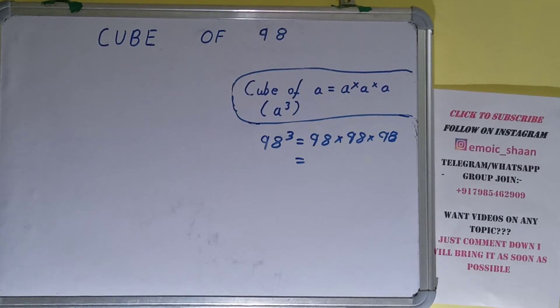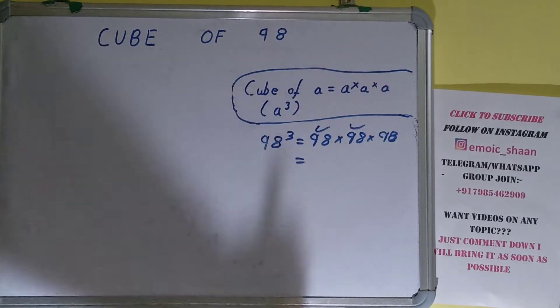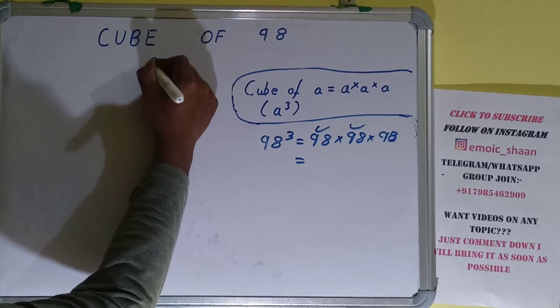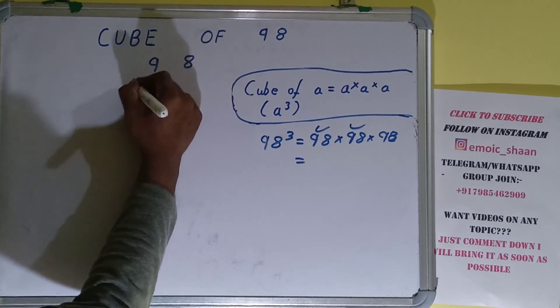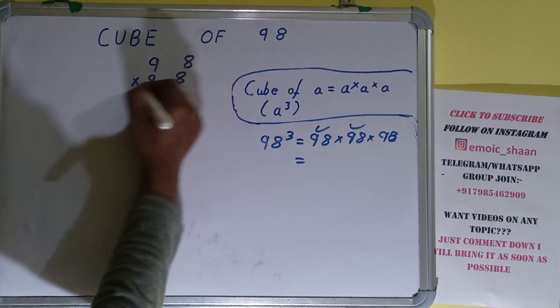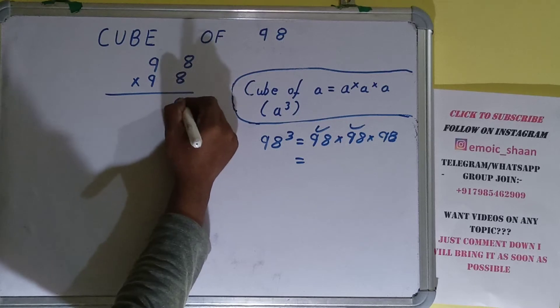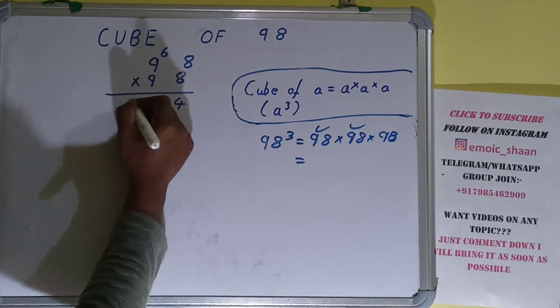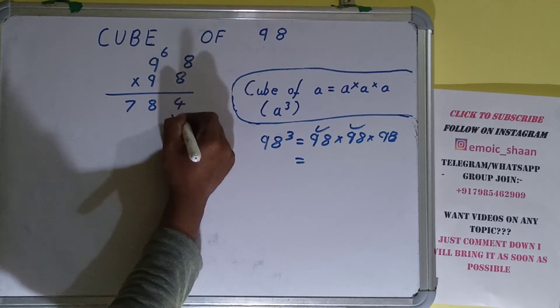To find out the answer, we'll be doing normal multiplication. We'll first multiply the first two terms, and whatever answer we'll be getting we'll multiply with the third term. Let's multiply 98 into 98. That's 8 times 8 is 64, 6 carry. 8 times 9 is 72 plus 6 is 78.